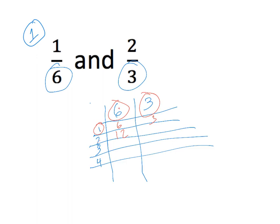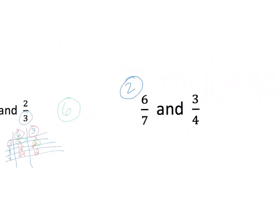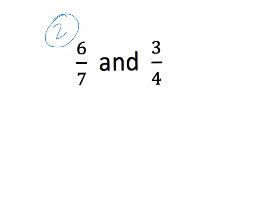One times six is six, one times three is three, two times six is twelve, two times three is six, three times six is eighteen, four times six is twenty-four, three times three is nine, and four times three is twelve. I can see right here that both columns share the number six, so our least common denominator between three and six is six.